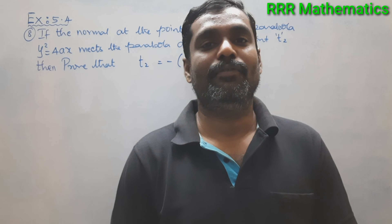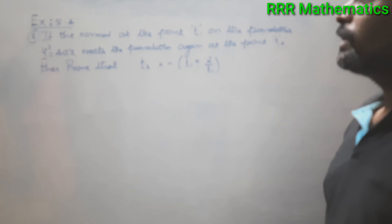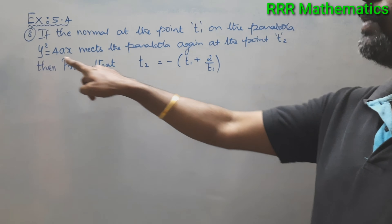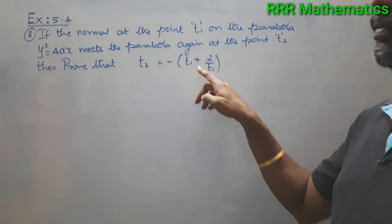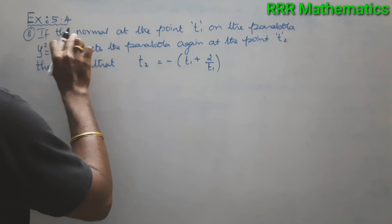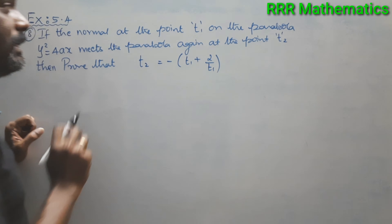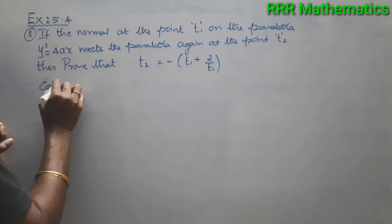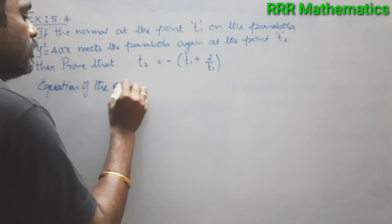Hi dear students, today we will discuss Chapter 5: Two-Dimensional Analytical Geometry, Exercise 5.4, Question number 8. If the normal at the point t1 on the parabola y² = 4x meets the parabola again at the point t2, then prove that t2 = -(t1 + 2/t1). The normal at the point t1 on the parabola y² = 4x meets the parabola again at the point t2. Let's find the equation of the normal.